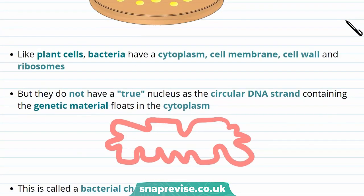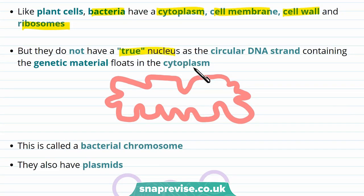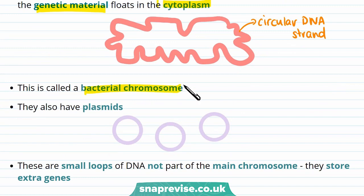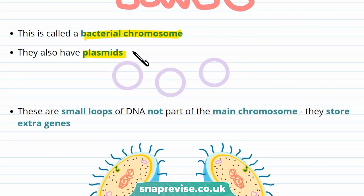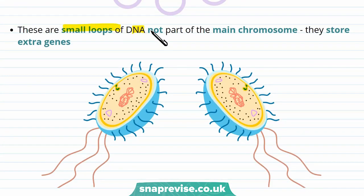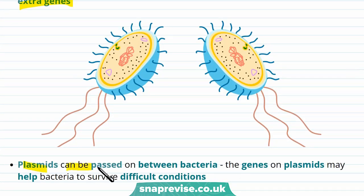Like plant cells, bacteria have a cytoplasm, cell membrane, cell wall, and ribosomes, but they don't have a true nucleus. This is because the circular DNA strand containing the genetic material floats in the cytoplasm — these strands are called bacterial chromosomes. They also have plasmids, which are small loops of DNA not part of the main chromosome. They store extra genes, and plasmids can be passed on between bacteria.